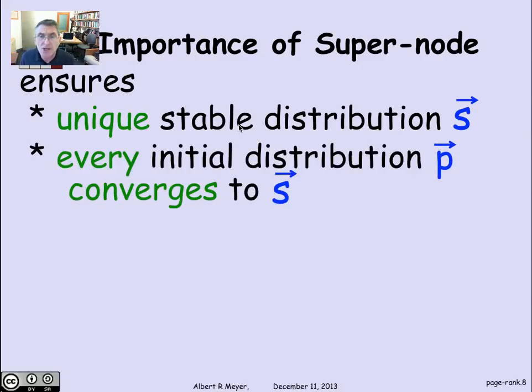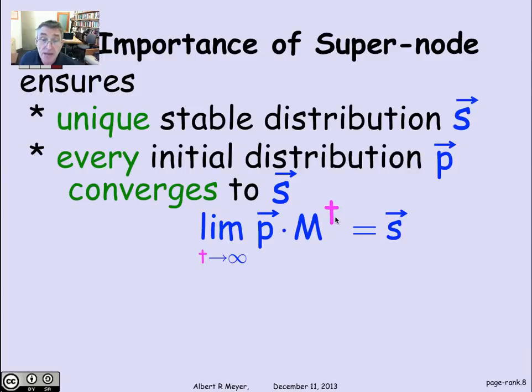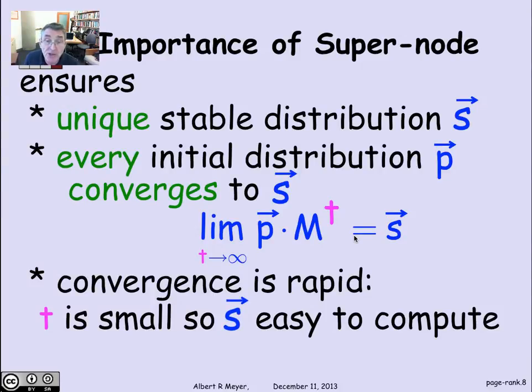The super-node mechanism also ensures that every initial distribution p converges to the stationary distribution, to that unique stationary distribution. If you start at an arbitrary distribution of probabilities p, and you look at what happens to p after t steps by multiplying the vector p by the matrix M raised to the power t, and take the limit as t approaches infinity, that limit exists and it is that stationary distribution. So it doesn't matter where you start, you're going to wind up stable. And the convergence is rapid, which means you can calculate the stable distribution reasonably quickly because you don't need a very large t to arrive at a very good approximation to the stable distribution.